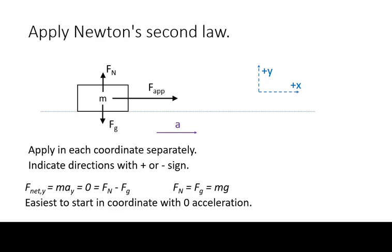In this example, the acceleration in the y coordinate is zero. The normal force is in the positive direction. The weight, also known as the force of gravity, is in the negative direction. Solving this equation, we get that in this case, the magnitude of the normal force is equal to the magnitude of the weight.